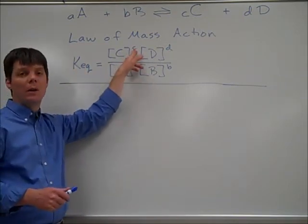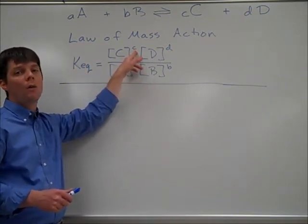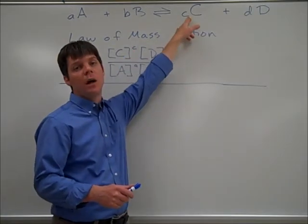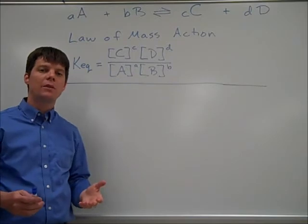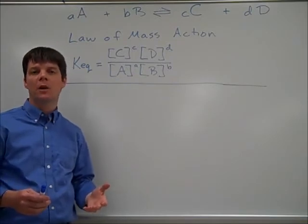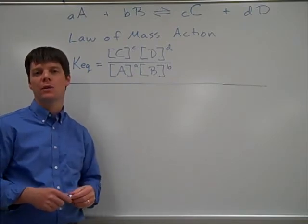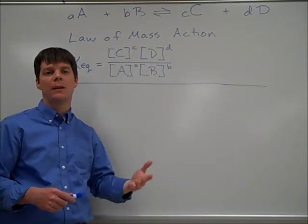So the exponent here would be whatever coefficient is needed in front of product C in order to balance the overall equation. So let's write an equilibrium expression for the process which produces ammonia from hydrogen and nitrogen gas.